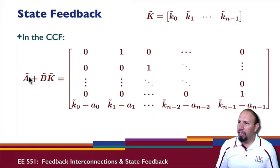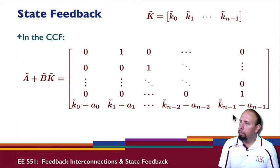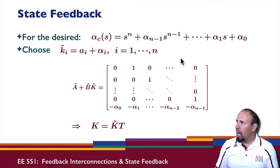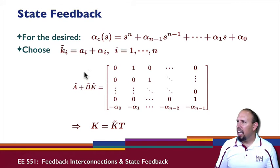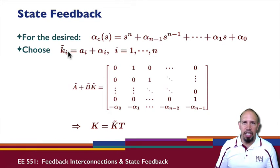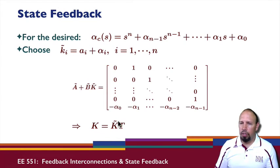A started off being a companion matrix, and when I add the state feedback term, I still get a companion matrix. This shows me how to pick k-tilde: since I want the system to have a specific companion form, if my desired characteristic polynomial has alpha coefficients, those alpha coefficients need to equal the coefficients of A-tilde plus B-tilde times k-tilde. That tells me I need to pick the k-tilde values to be A_i plus alpha_i. This gives me the state feedback gain in the tilde coordinates. To get it in the original coordinates, I need to multiply through by the transformation matrix.